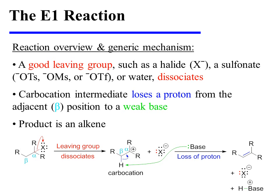In the E1 reaction, a good leaving group, such as a halide, a sulfonate, or water, dissociates. The carbocation intermediate thus formed then loses a proton from the adjacent beta position to a weak base. The product of the reaction is an alkene.